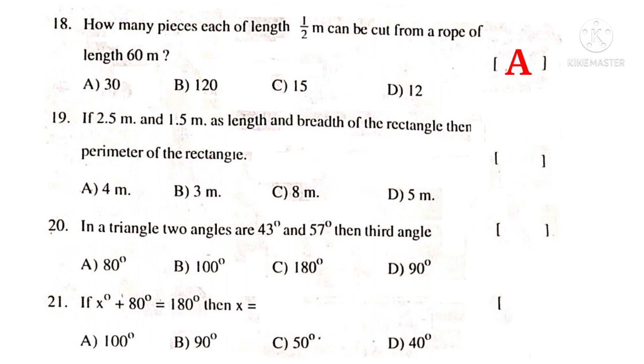If 2.5 meters and 1.5 meters as length and breadth of the rectangle, then perimeter of the rectangle. Observe the word perimeter. It means sum of the sides. That is equal to 2 lengths plus 2 breaths. Taken 2 as common, 2 into L plus B. That is equal to 2 into 2.5 meters plus 1.5 meters. That is equal to 2 into 4 because 2.5 plus 1.5 gives 4. 2 into 4 is 8 meters is the answer. So, the correct choice is C.